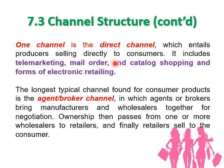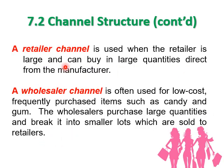In a direct or one-channel structure, products go from manufacturer directly to consumers — services typically use this channel because you cannot transfer a service from one party to another. The longest typical channel for consumer products is the agent or broker channel, where agents bring manufacturers and wholesalers together for negotiation, ownership passes through one or more wholesalers to retailers, and finally retailers sell to consumers. Remember: in the retailer channel, consumers buy from retailers; in the wholesaler channel, retailers buy from wholesalers.